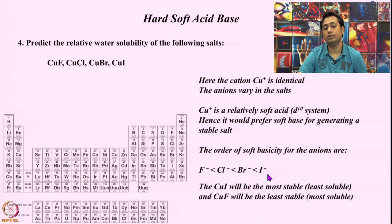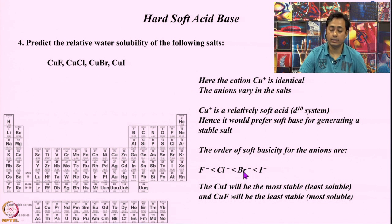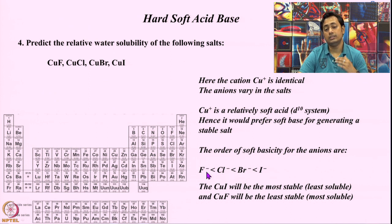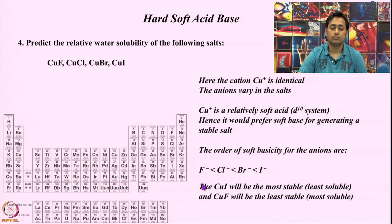The bond strength between copper and the halides follows the trend: copper iodide is the strongest — both are soft. Copper bromide is still soft but not as soft as iodide. Copper chloride starts moving toward the hard system, so it is a mismatch and much weaker. Copper fluoride is the weakest because fluoride is the hardest base present in this system — the most mismatched combination with the soft acid Cu⁺.